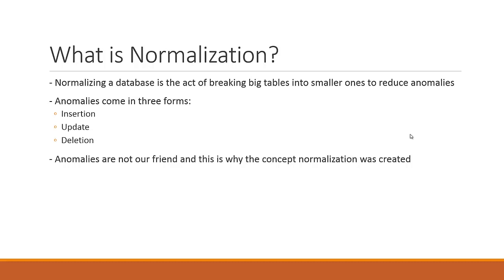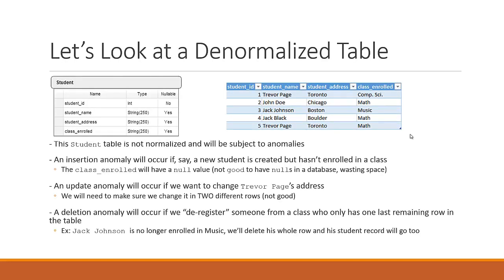Anomalies come in three different forms: insertion anomalies, update anomalies, and deletion anomalies. Anomalies are not our friend, and this is why the concept of normalization was actually created. So let's look at a table that is the opposite of normalized — that's what we call denormalized. So this is a table that we've created, a table design, a schema if you will.